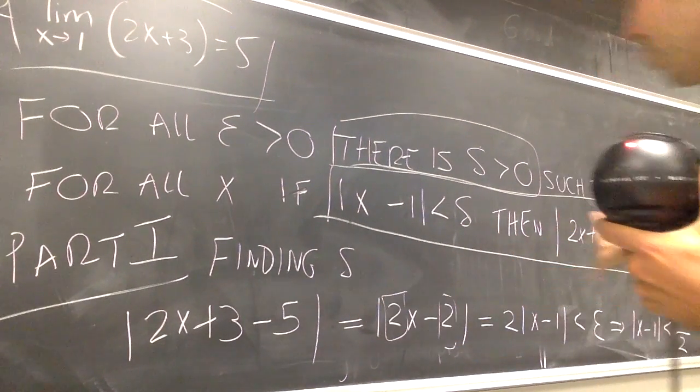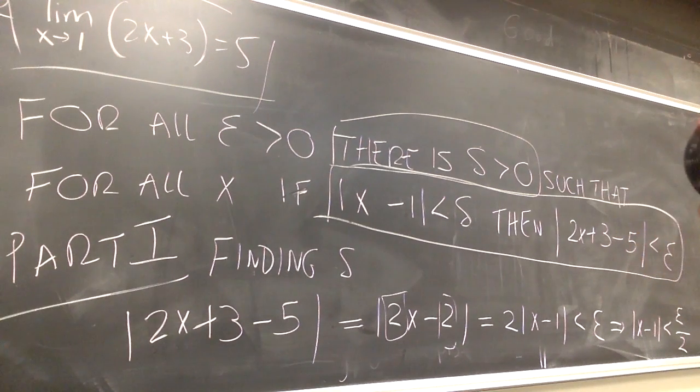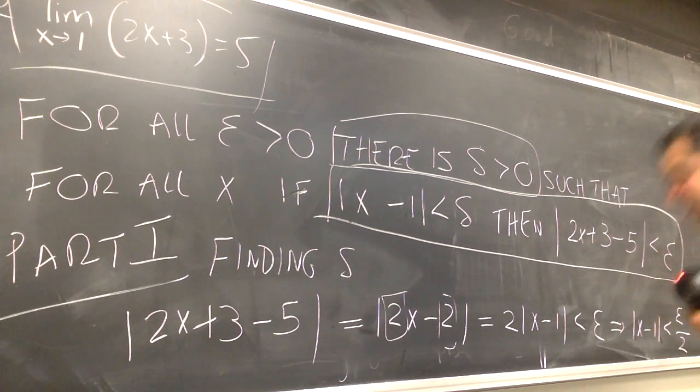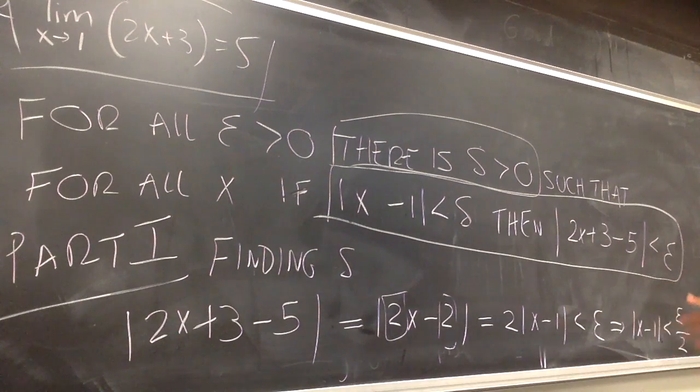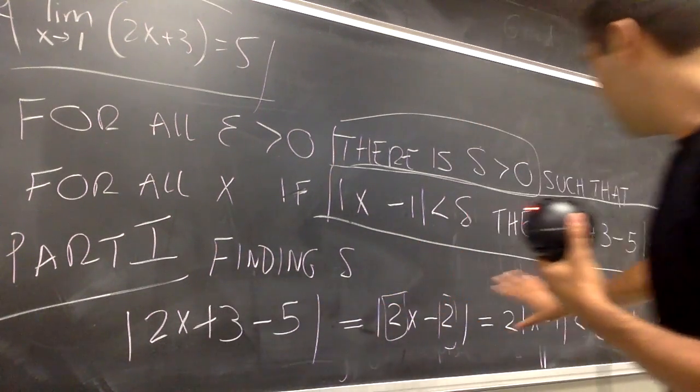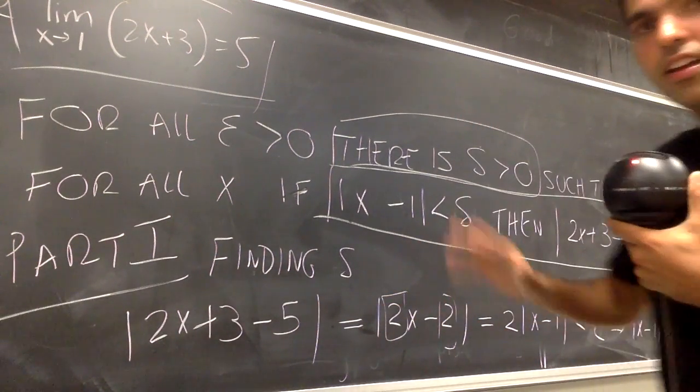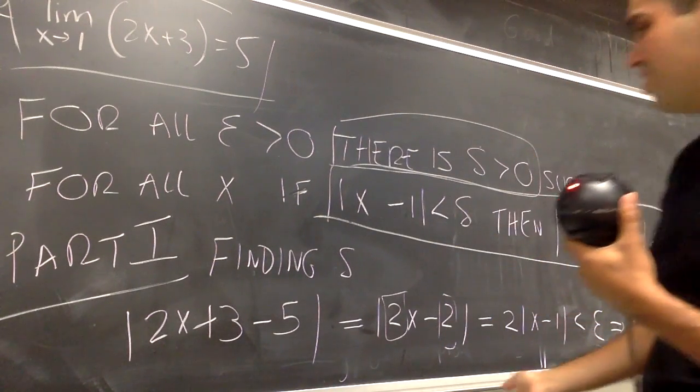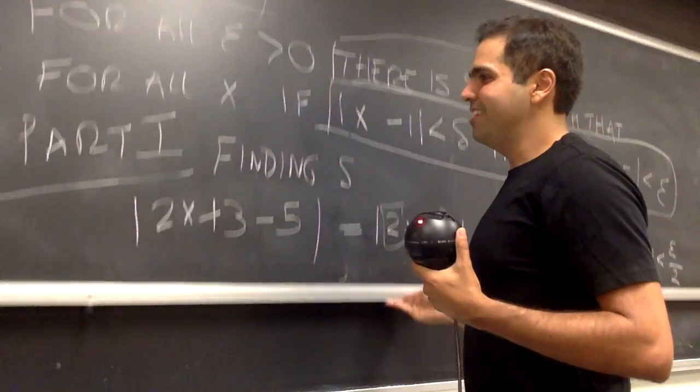What does that mean for x minus 1? It means that x minus 1 is less than Epsilon over 2. Notice that this sort of gives us a good guess for Delta. Because, what does this say? It kind of says that if x minus 1 is less than Epsilon over 2, then, if you go back this whole chain of inequalities, then this expression is less than Epsilon.